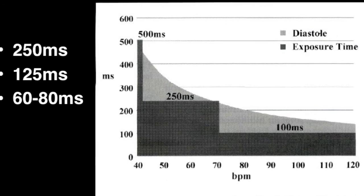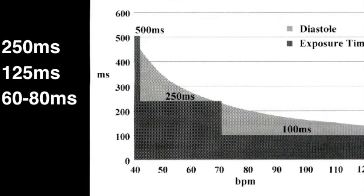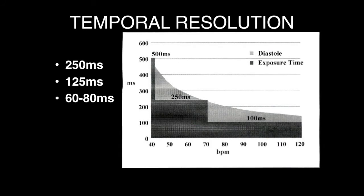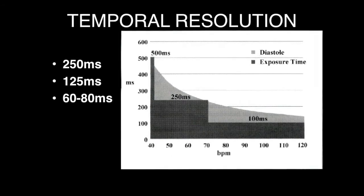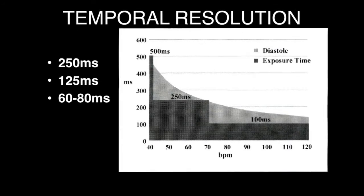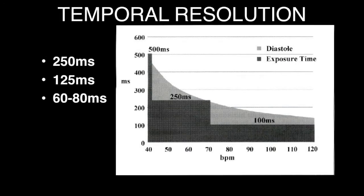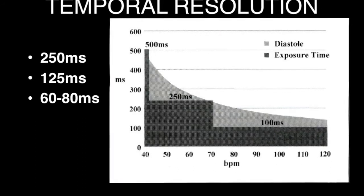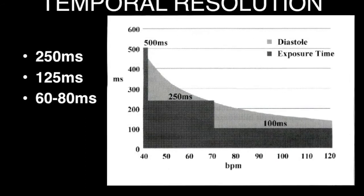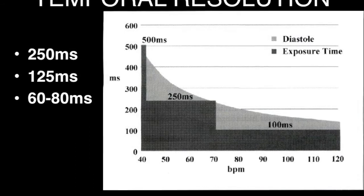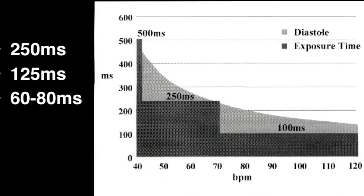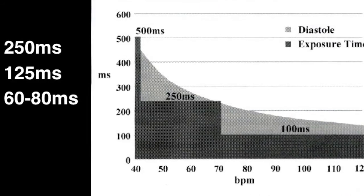With a longer end-diastolic phase, we can capture the heart when it is in its least motion for a longer time — this is a simple explanation of temporal resolution. In the graph, for heart rates less than 70, the diastolic phase is longer and the exposure time is almost up to 250 milliseconds, which is the temporal resolution of the scanner. As the heart rate increases from 70 to 120, the exposure time and temporal resolution reduce to as low as 100 milliseconds.